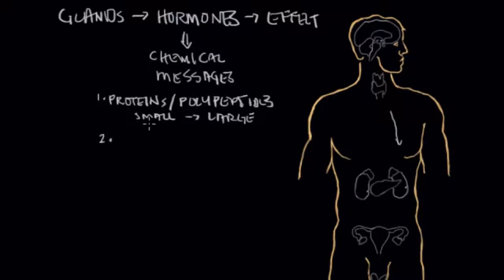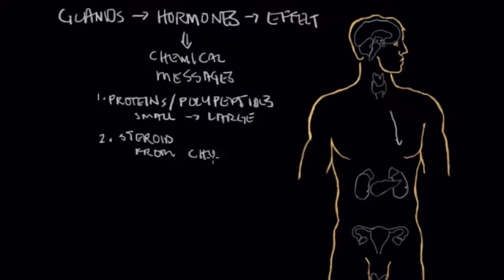The second class after proteins and polypeptides are steroid hormones. Unlike proteins and polypeptides that are made up of amino acids, steroid hormones are typically derived from cholesterol, which is a lipid. Steroids are made up of lipids and have lipid-like qualities — they're not charged and they can pass through cell membranes, which means the receptor, instead of being on the outside of the cell, may be on the inside of the cell.